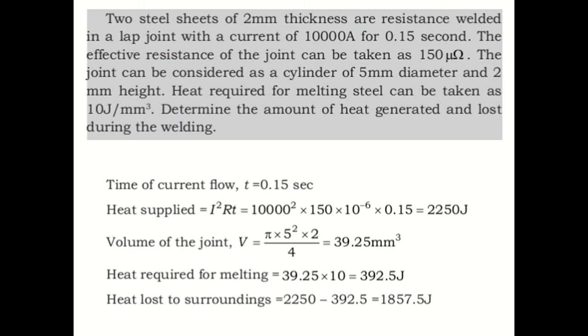The time of current flow is given - it's 0.15 seconds. The current is 10,000 amperes. And what is R, the resistance? 150 micro-ohms. You can convert this into ohms value - that is 150 × 10⁻⁶, which gives 0.00015 ohms. This is how 150 micro-ohm is converted into ohms.